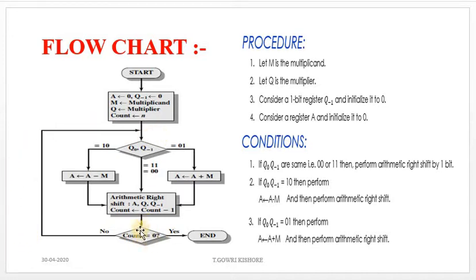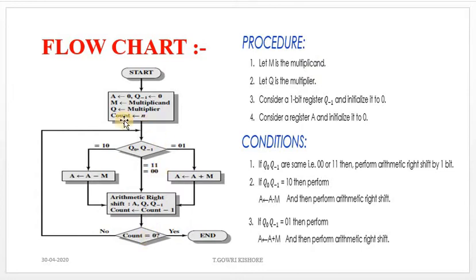The count is initialized to N, where N is the number of bits of the Multiplier or Multiplicand. For example, if you have a 4-bit Multiplier or Multiplicand, then the count equals 4.